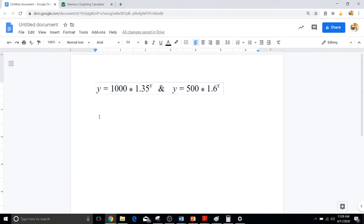The first equation we have is y equals 1000 times 1.35^x, and y equals 500 times 1.6^x. Now we've already investigated both of these and we found that over time this one is going to give us more money as a financial plan whereas this one starts off much larger. So let's go ahead and use these two on Desmos and see how they look as graphs.